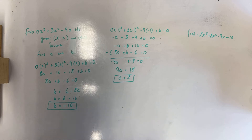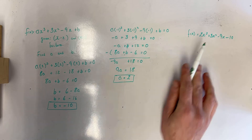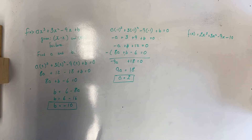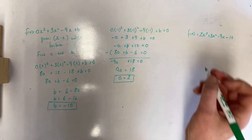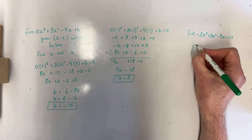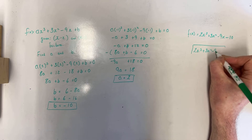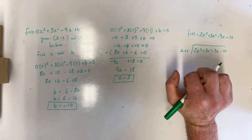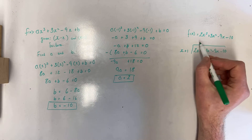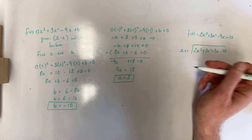The final part of the question asks us to find the missing third factor. I'm going to take my function and divide it by one of its known factors — I'll choose to divide by x plus 1. The result will be a quadratic, and when I factor that quadratic I'll get two linear factors: one will be x minus 2, which we already know, and the other will be the missing third factor.